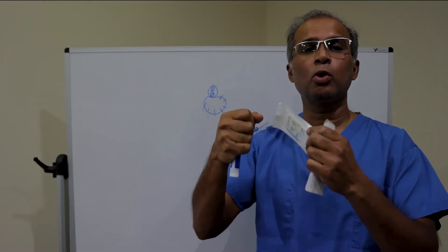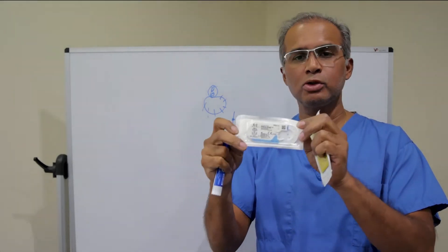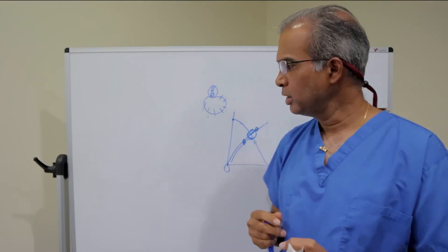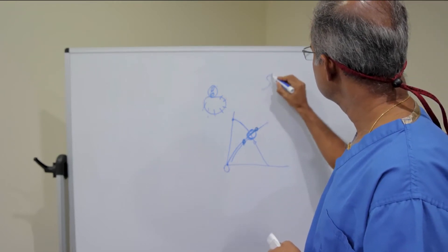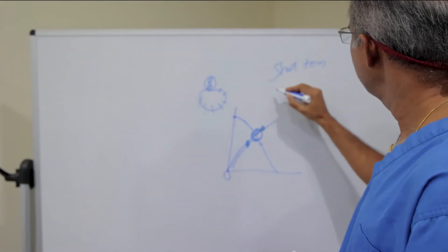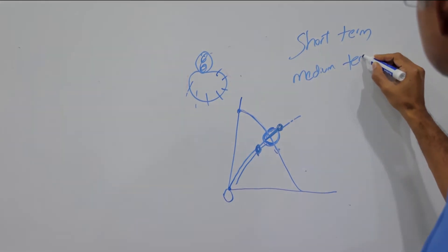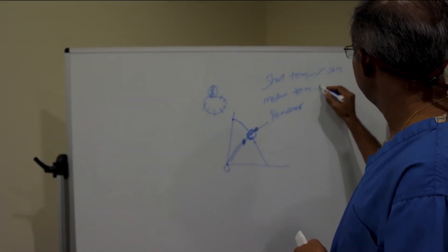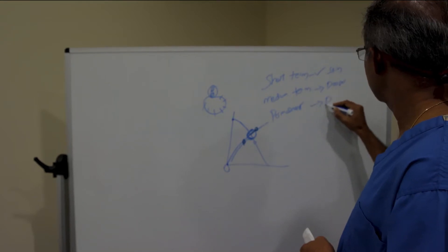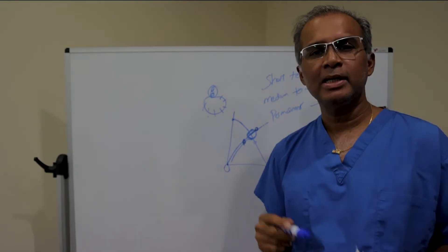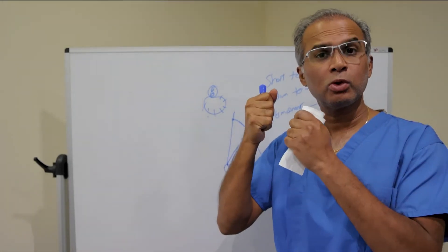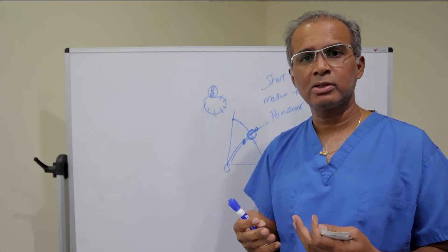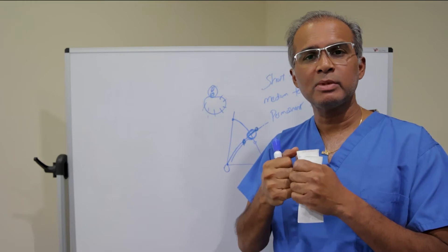Some surgeons use a permanent suture deep in deeper tissues because they believe that you never want the strength of the suture to go away so that it holds the tissues long term. So they use permanent sutures and these could be called Prolene sutures or nylon sutures. There's many kinds. The permanent suture. So here we're talking about short term, medium term, and permanent. Short term for skin, medium term for deeper, and permanent also for deeper. The idea here is if you have a permanent suture, the suture is always going to be there and always hold the tissues where you put it deep underneath the skin.